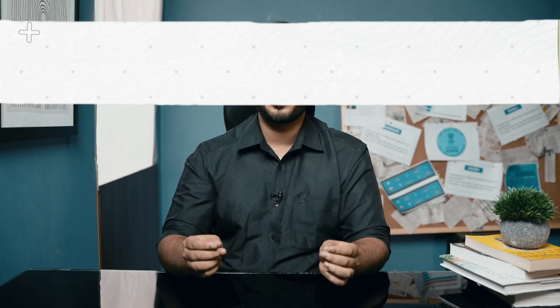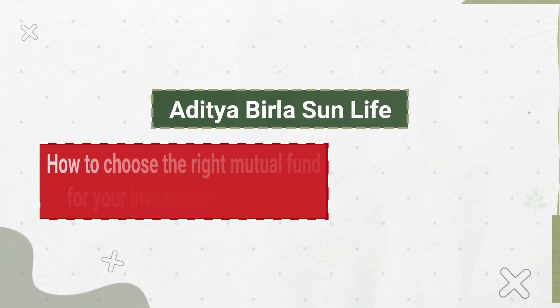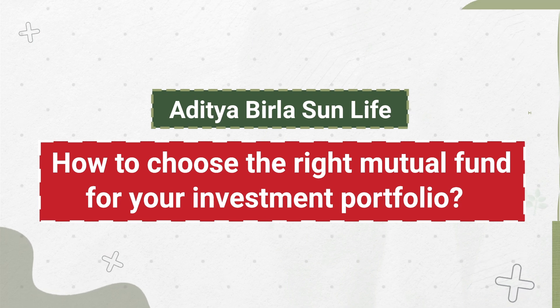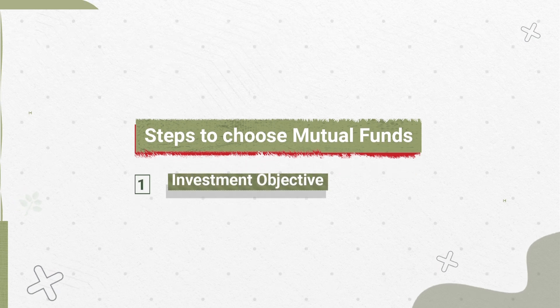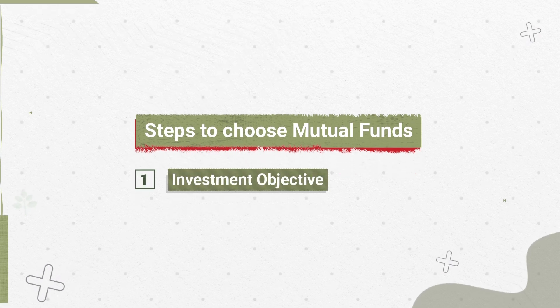The question to ask here is: how do you really select such mutual funds? Let's take a look at some parameters that will help you choose the best mutual funds. The first parameter is your own investment objectives. Depending upon what kind of investment objective or financial goal you have, the kind of asset class you need to invest in changes.